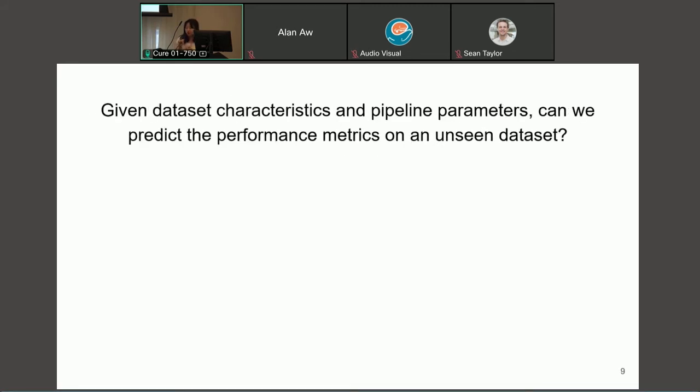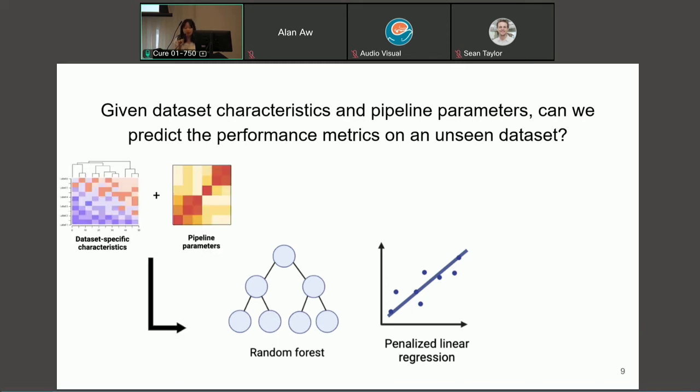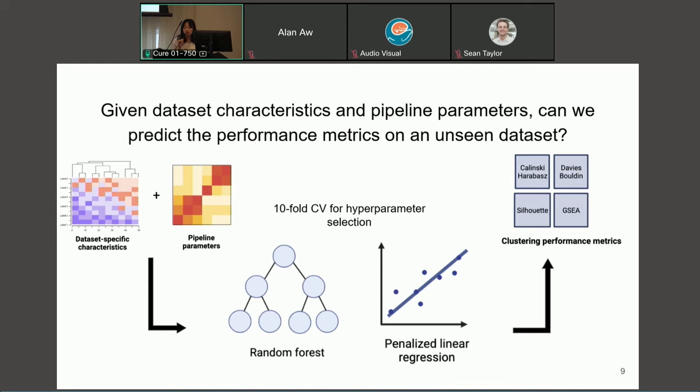And so now that we have our metrics and our data, once again the question we are trying to answer is, given the dataset characteristics and pipeline parameters, can we predict these performance metrics on an unseen dataset? And to this end we tried two different models, random forest, as well as penalized linear regression. And we gave the dataset-specific characteristics and pipeline parameters as input to these models and they would output predictions of the clustering performance metrics. And for each of these two models we used tenfold cross-validation in order to tune the hyperparameters.